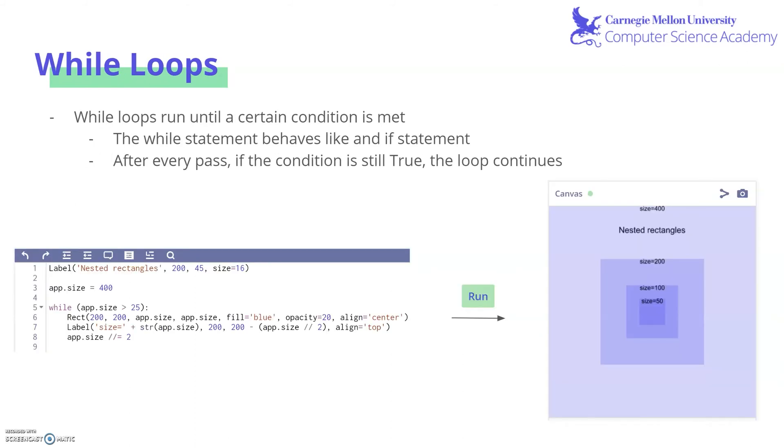We've already learned about for loops, but there's actually another kind of loop called a while loop. And they run until a certain condition is met. So for loops run for a known amount of time because we set its range. But a while loop can run for an indeterminate amount of time until a certain condition is no longer met. So it usually has a while statement, which sort of behaves like an if statement. And after each pass, if the condition is still true, the loop continues.